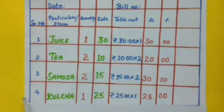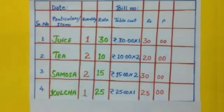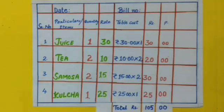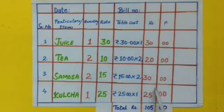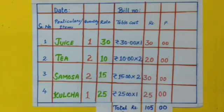Serial number 4, name of the item: kulcha, quantity is 1, and rate of one kulcha was rupees 25. So total cost for kulcha is 25 rupees. In the end, the total is the sum of all the total costs.